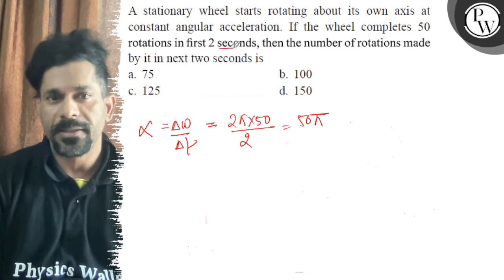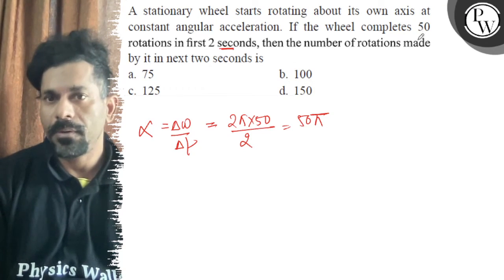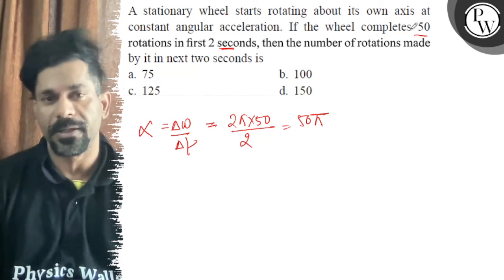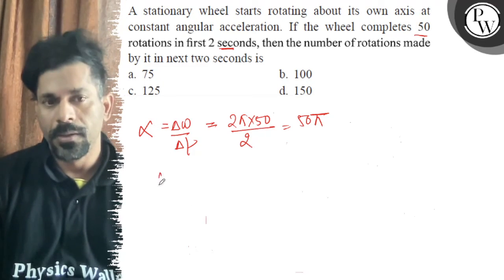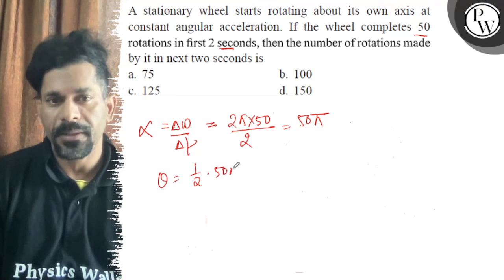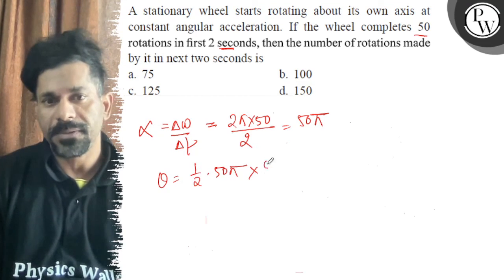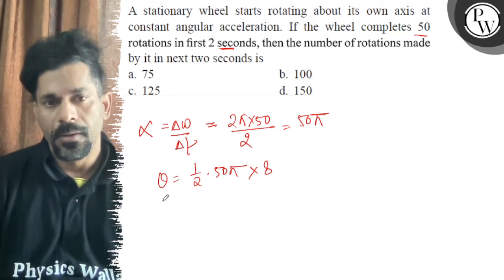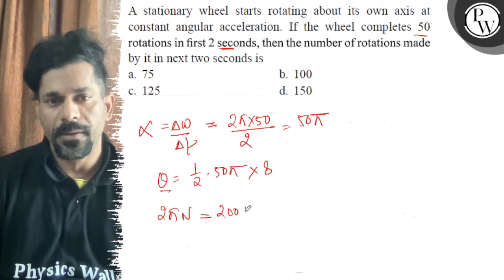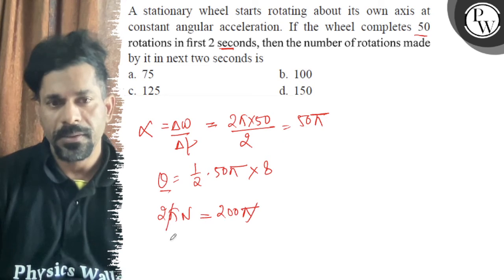Now, in 2 seconds the rotation completes 50 rotations. So in the next 2 seconds, how much is it? That's 4 seconds total. So theta is equal to 1/2 of alpha t squared — that means t squared is 8. So 2π into n is equal to 200π, so n is equal to 100.